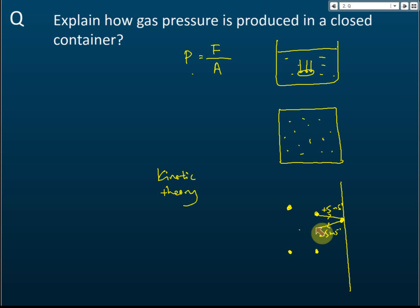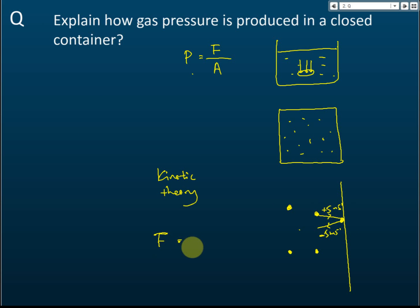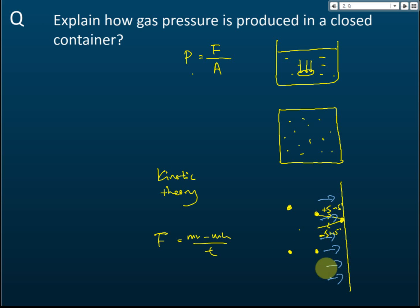When a gas molecule collides with the wall and bounces back, there is a velocity change, and therefore a change in momentum. Force is defined as the rate of change of momentum — impulsive force equals change in momentum divided by time. So this momentum change produces a force on the wall, and force per unit area is the pressure.